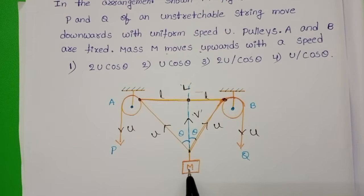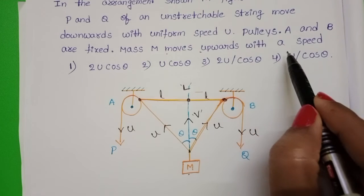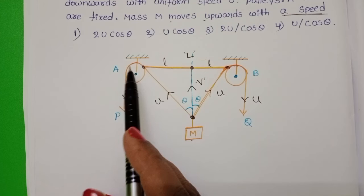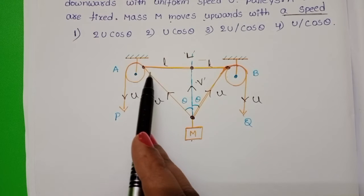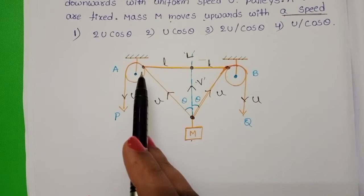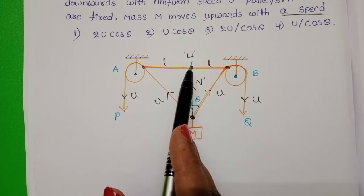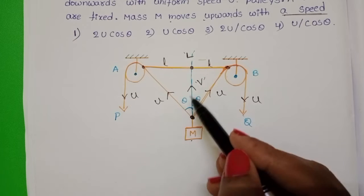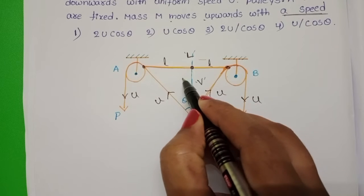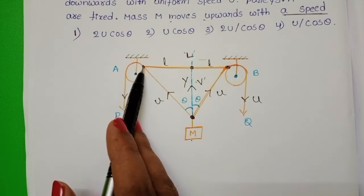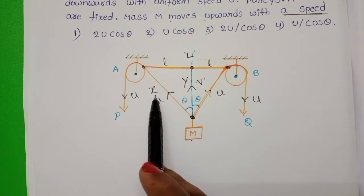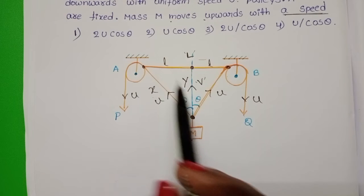Let us take speed of the mass in upward direction is V. In this problem, we have to find out the speed of mass M. From this point to here, this length is variable. At the same time, this length also variable. But the length in between the pulleys only constant. So let us take length in between these two points Y. And this length X. So X and Y are variables. L is constant.